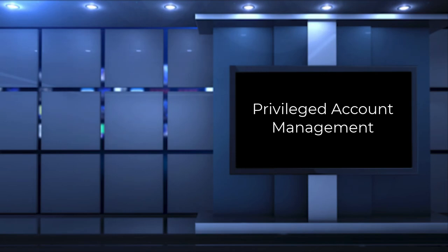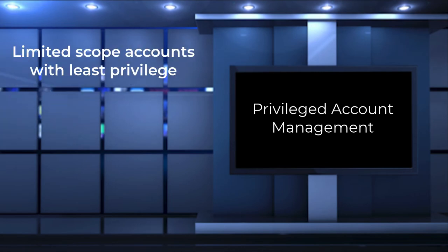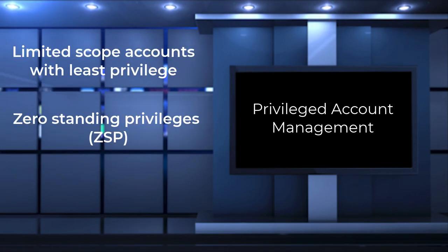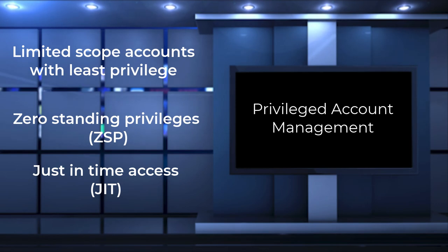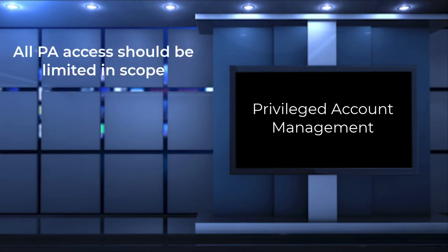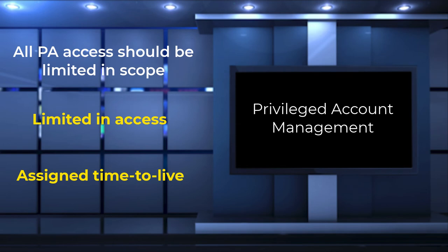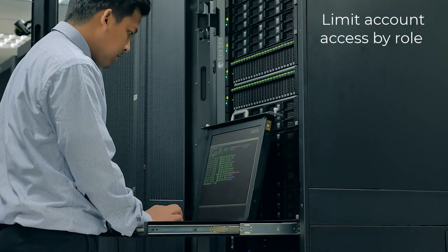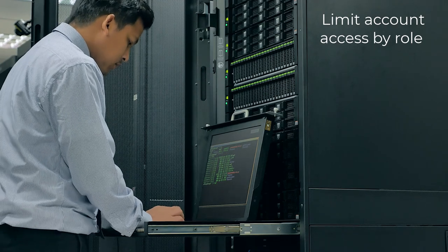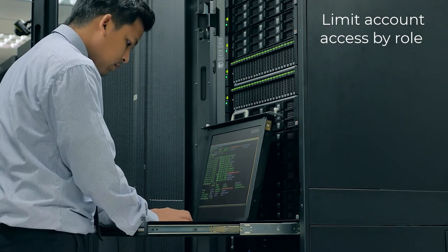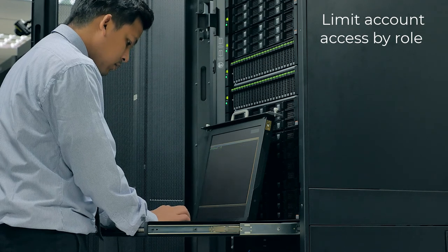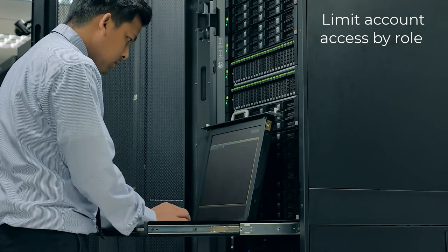Gartner Research recommends two primary goals for privileged account management: least privilege with limited scope accounts, and implementation of zero standing privileges with just-in-time access. Account scope addresses what a PA can see and do, limiting the time that access is available. Organizations should manage the scope for each PA based on risk, enforcing least privilege to restrict an account to a specific set of tasks, with rights and permissions clearly defined by policy to enable specific system or network management capabilities.